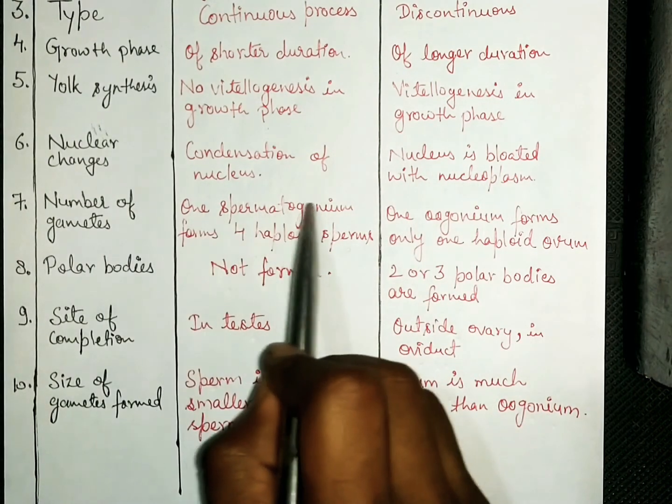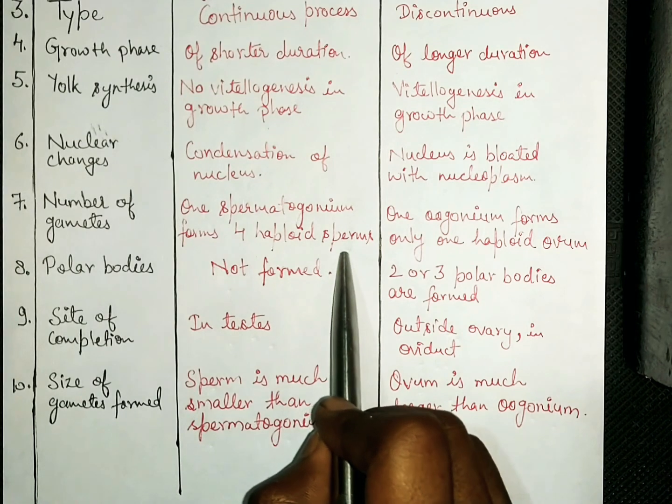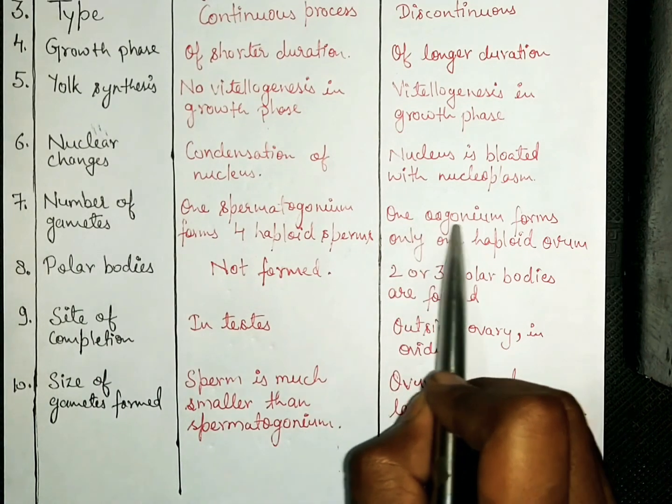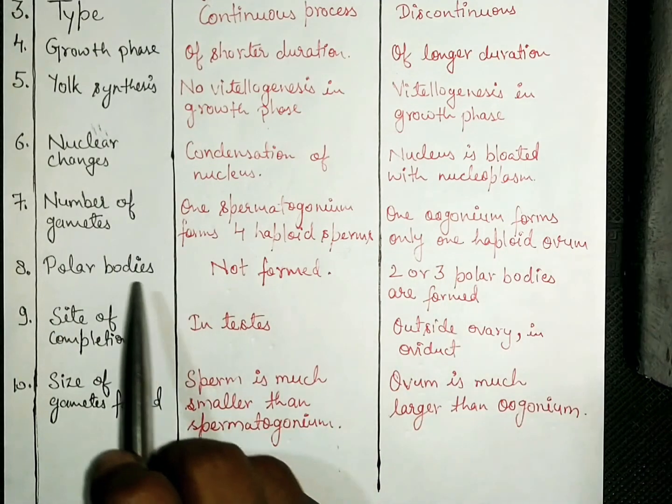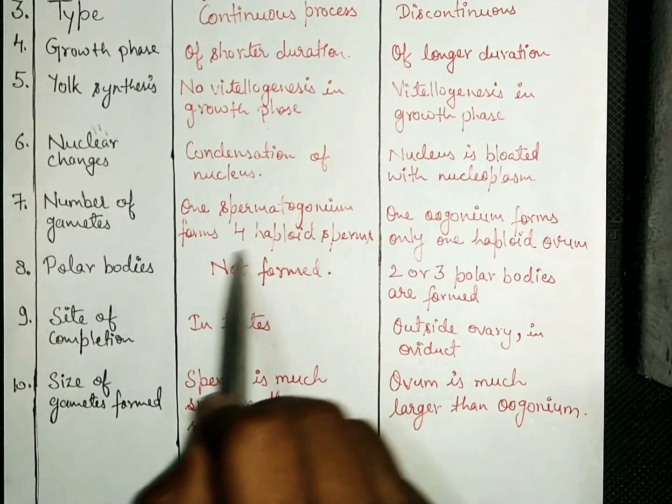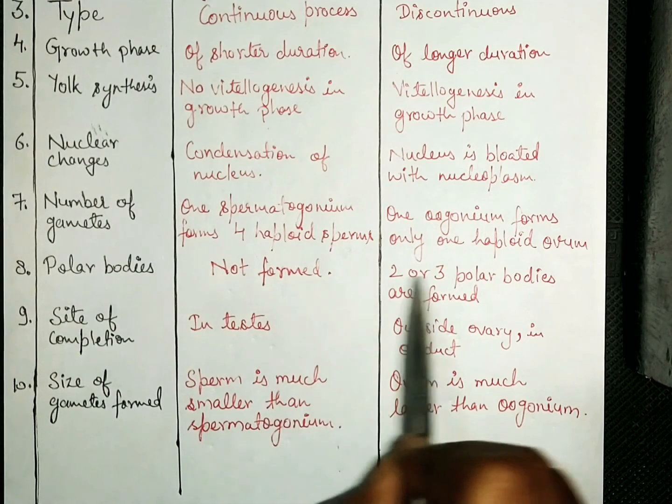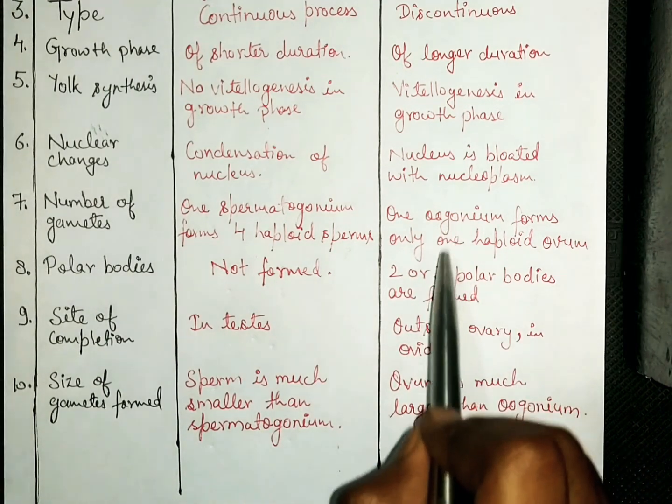One spermatogonium forms four haploid sperms in spermatogenesis and in oogenesis, one oogenium forms only one haploid ovum. कोई भी polar bodies spermatogenesis में नहीं बनती हैं and two to three polar bodies are formed in oogenesis.